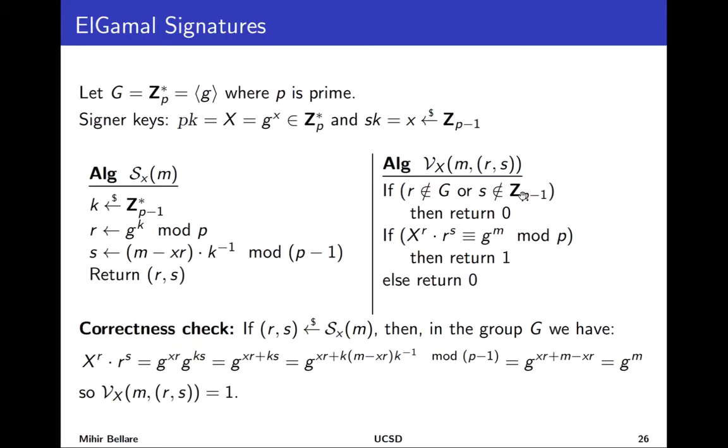So first off it's clear that this part is okay because this r is a group element and the s since it's generated mod p minus 1 is in Z_p-1. So we look at the equation. We are assuming here that this has been generated through the signing algorithm. So all of these equations are true. And now compute X^r times r^s. And just substitute. Big X here is the public key which is g^x. We know that from here. Little r from here is g^k. So raising it to the s we get this. Simplify that as g^(xr + ks).